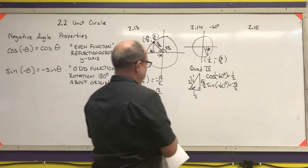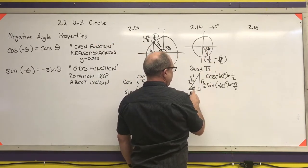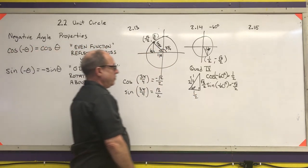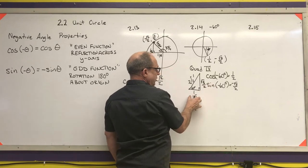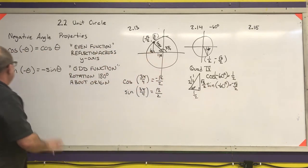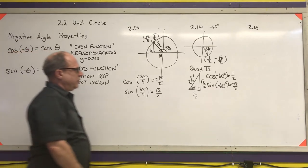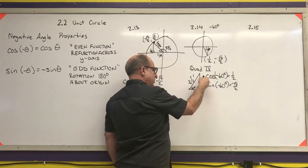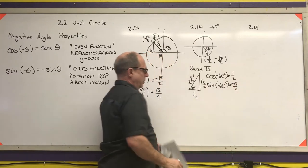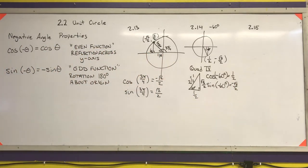A second method: since it's -60 degrees, use the negative angle properties. Cosine of a negative angle equals cosine of the original, so cosine of -60° equals cosine of 60° equals 1/2. Sine of a negative angle equals the negative of the original sine, so sine of -60° equals negative sine of 60° equals -√3/2.